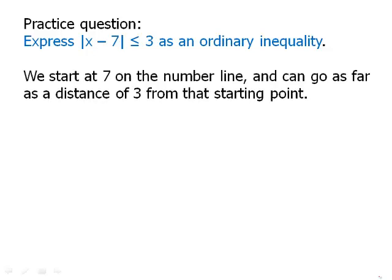Well, we start off from 7 on the number line and we can go a distance of 3 from that starting point. We can go a distance of 3 in either direction. So when we go down 3 we get to 4. When we go up 3 we get to 10. Those are the two endpoints.